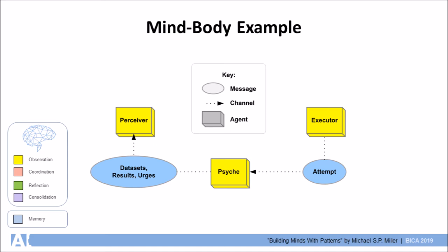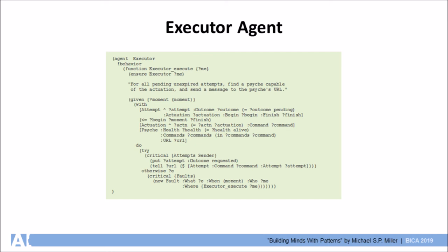And here is the code for the executor agent. The executor looks for all pending unexpired attempts and finds a Psyche in its registry capable of performing the attempt's actuation. Once found it sends a message to the Psyche's URL.